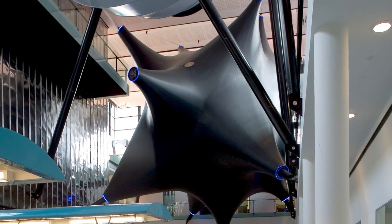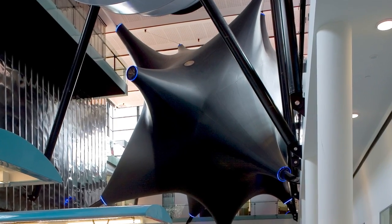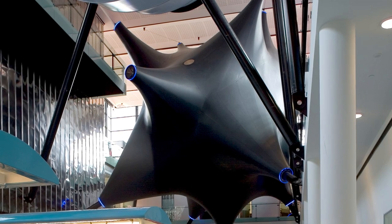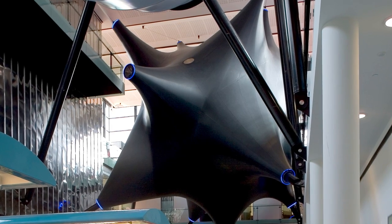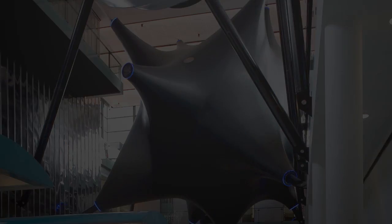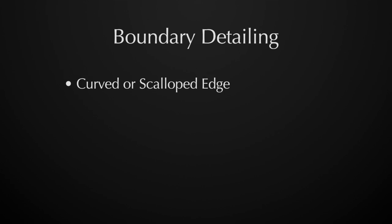Decisions made at this point will affect the fabrication and installation methods. Boundary detailing is an essential element falling into three main categories: curved or scalloped edges, straight edges and fabric edges.